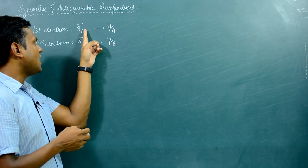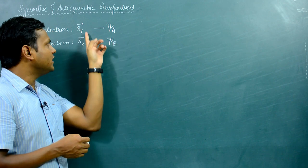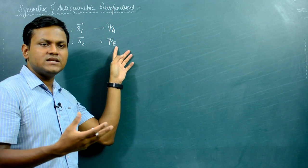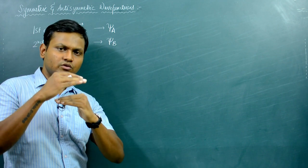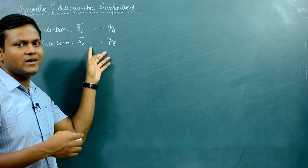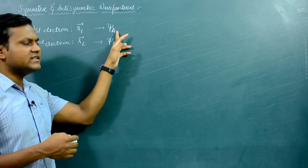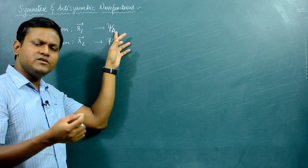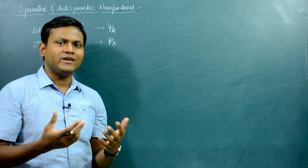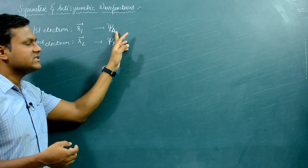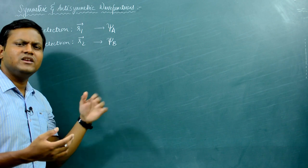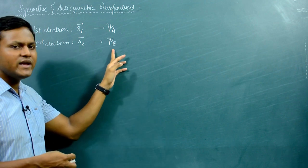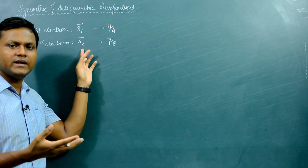Do not get confused by the subscripts R1, R2 and ψA, ψB. The labels 1 and 2 simply refer to positions, while A and B refer to the wave function solutions or eigenstates. The eigenstates determine the energy levels in which the electrons are present and are not dependent on R1 and R2. An electron in eigenstate ψA can be present at R1, R2, R3, or any number of locations.